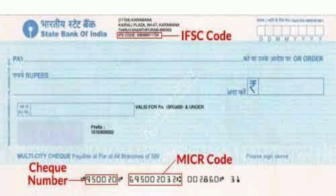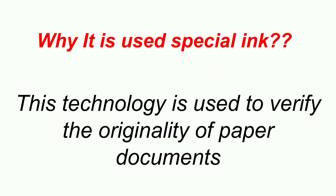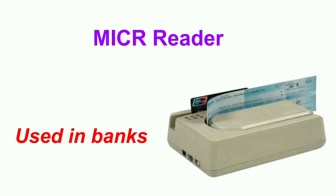Why is it so? Do you know? Because this technology is used to verify the originality of paper documents. If the bank wants to verify whether the bank check is original or not, this is the method they use. On the bank check, some special ink characters will be there. See this? This is the machine used in banks in order to verify the originality of bank checks. When we place a bank check inside the machine, the machine will verify the originality of the document. We call this the MICR reader — Magnetic Ink Character Recognition reader.